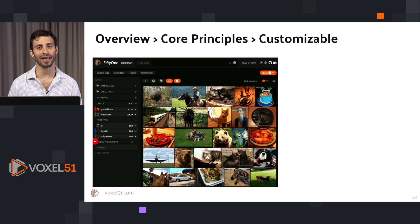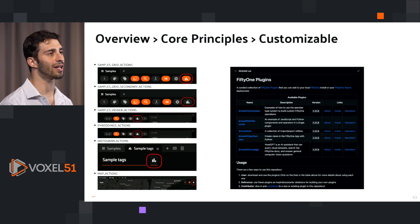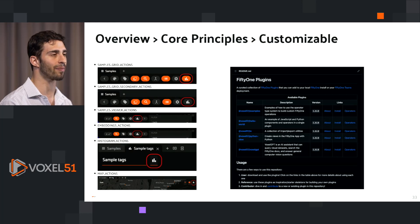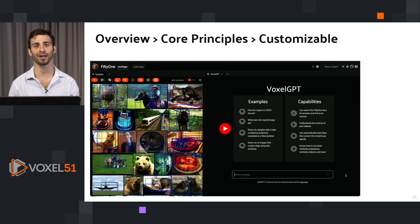One simple example of customizability is creating groups for attributes in the filter bar and moving attributes into different groups. But the customizability goes much further. At the heart of it are plugins. Plugins allow you to extend FiftyOne's flexibility and functionality in a variety of ways — you can write plugins in Python to perform a block of code in a single operation, or write a plugin that adds buttons or entire panels to the app, such as model evaluation panels. VoxelGPT, shown in the teaser, is also implemented as a plugin, providing chatbot-like dataset querying and docs querying capabilities.